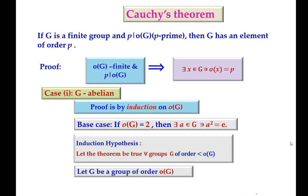Now we have Cauchy's theorem, which states that if G is a finite group and P divides the order of G, where P is a prime number, then G has an element of order P. So we are given G is a finite group and P is a prime number which divides the order of G, then G should have an element of order P.